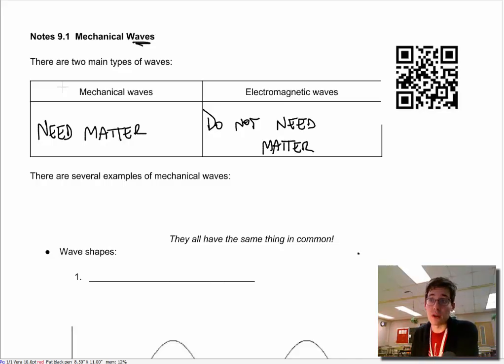Mechanical waves though, they need matter to travel. So there are several examples of mechanical waves. Good ones, vibrations in general, are a form of waves. If they're organized, the vibration would be a wave. There's no vibrations if there's no matter. A specific type of vibration is a sound wave.